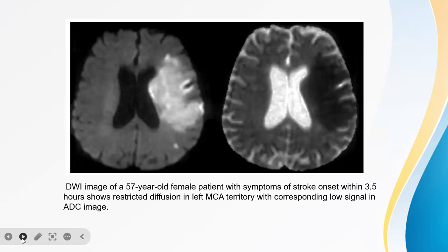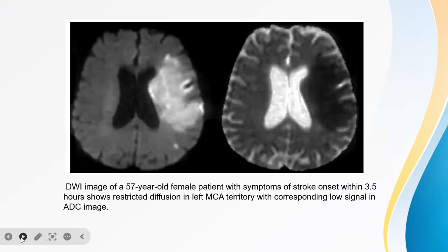These are the images taken during the study. This is a DWI image of a 57-year-old female with symptoms of stroke onset within 3.5 hours, showing restricted diffusion in the left MCA territory with corresponding low signal in ADC.